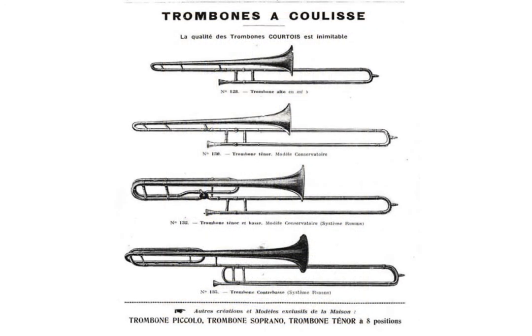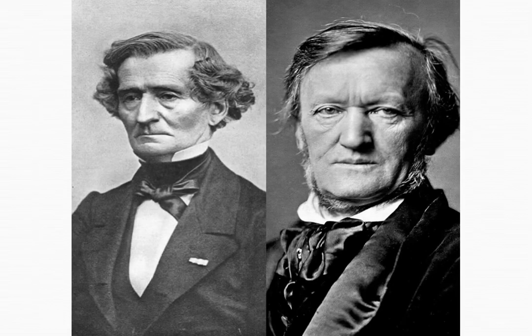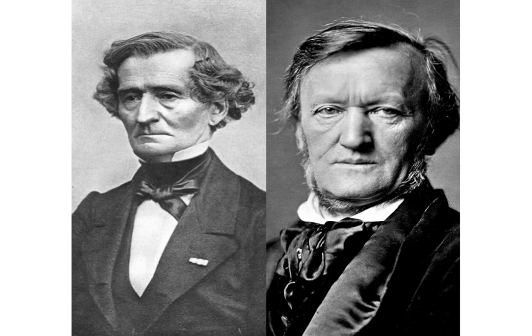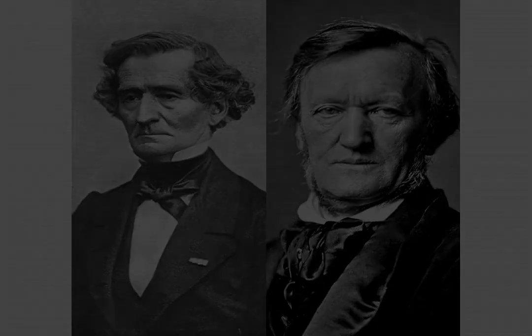In the mid-19th century, the trombones underwent changes again. Their bell size was widened because a larger, louder sound was favored at the time. Composers like Berlioz and Wagner relied on trombones for the bigger volume.